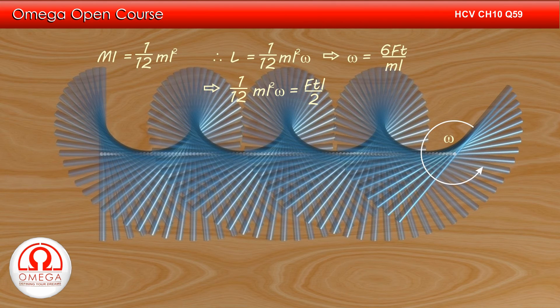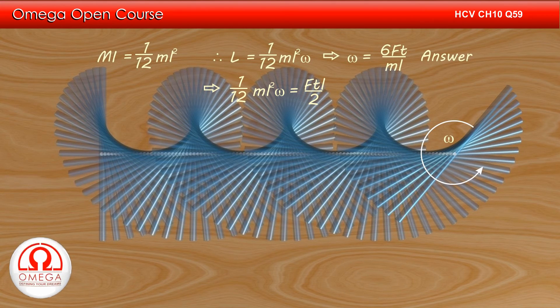Simplifying, we get omega is equal to 6FT divided by mL. This is the answer to part B of the question.